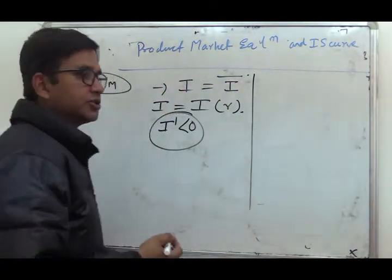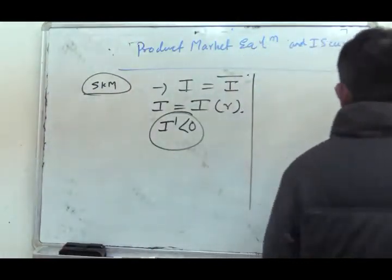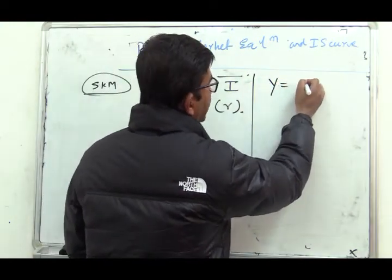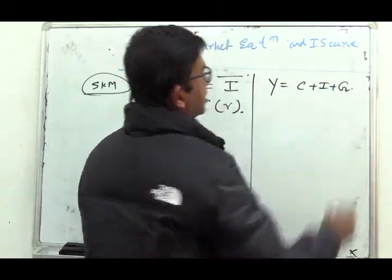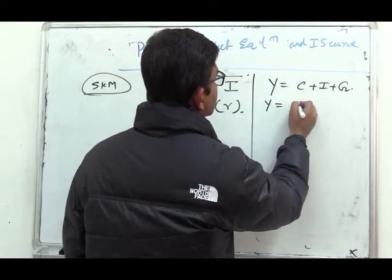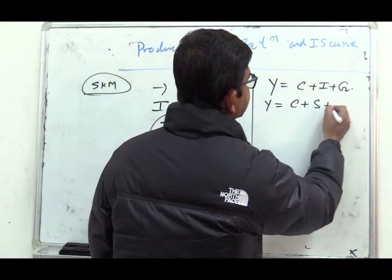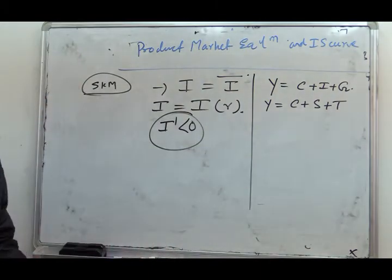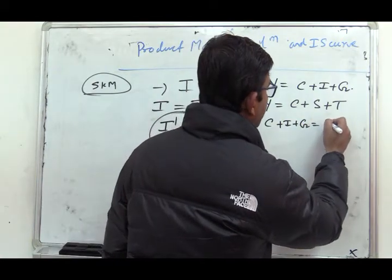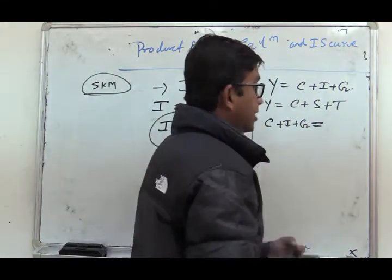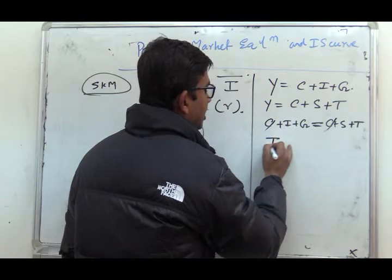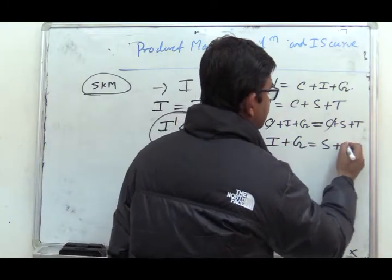Next, if we consider how income is disposed of and what are the components of aggregate demand, we see one identity: Y equals C plus I plus G in a closed economy with government intervention. And how income is disposed of: Y equals C plus S plus T. From here we can get C plus I plus G equals C plus S plus T, so if we cancel these, we find that I plus G equals S plus T.